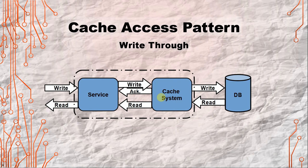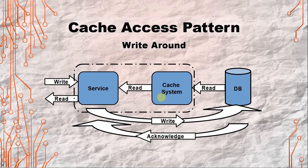Write-through: the service decides to write to the database, but instead it sends the information to the cache system and the cache system replies with an acknowledgement. That information is accessible for reading, and the cache system takes care of writing directly to the database.